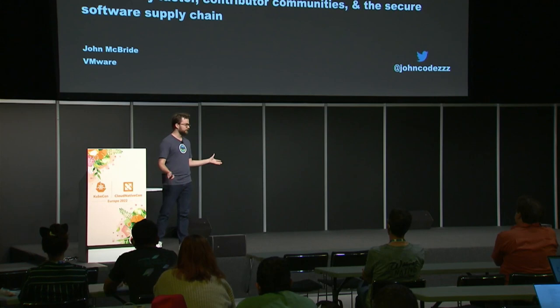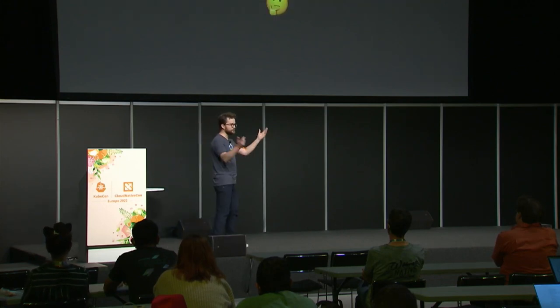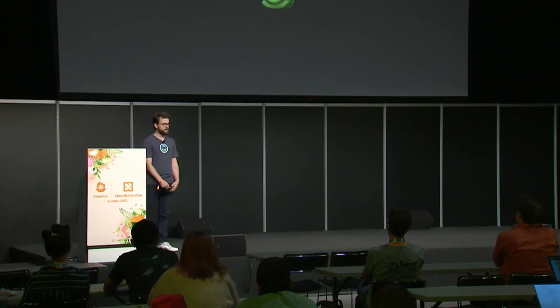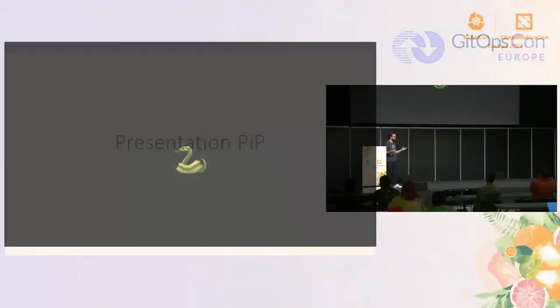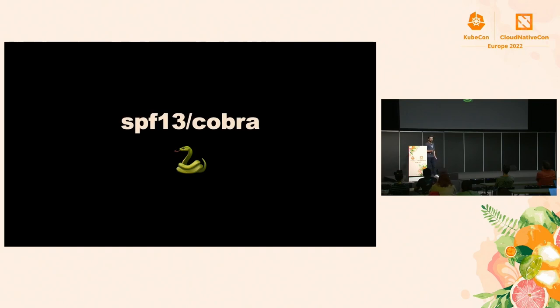One of the things I always ask myself whenever I show up to one of these talks is, who the heck are you? My name is John McBride. I'm a senior software engineer at VMware, and I work on our open-source Kubernetes platform, which is Tanzu Community Edition, along with ancillary open-source projects around Kubernetes, Kind, and one of those projects is SPF 13 Cobra.